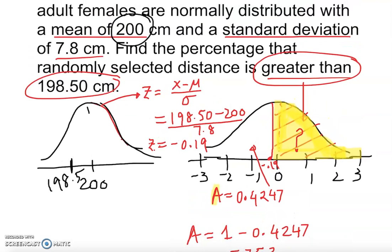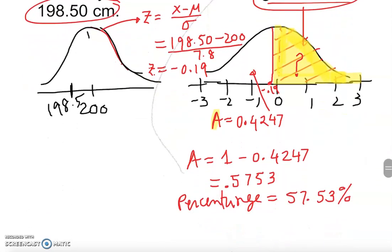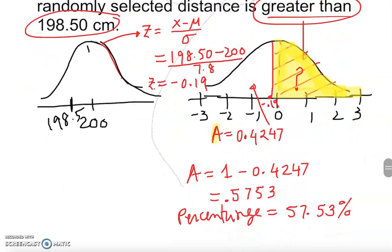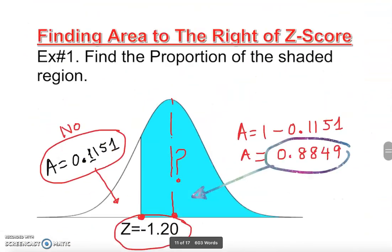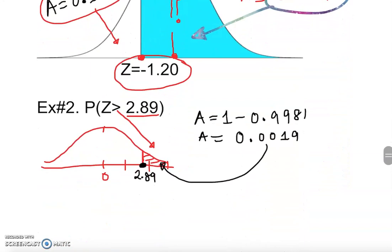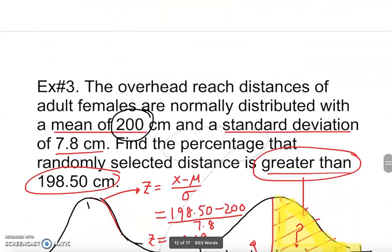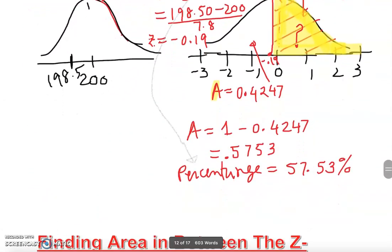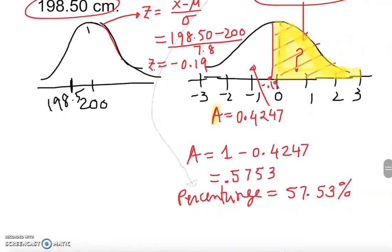I hope you understand how to find the area to the right of a z-score. We covered all three scenarios: a shaded portion with a given z-score, a plain z-score to the right, and an application problem. In all three cases you know how to find the area to the right. Thank you very much.